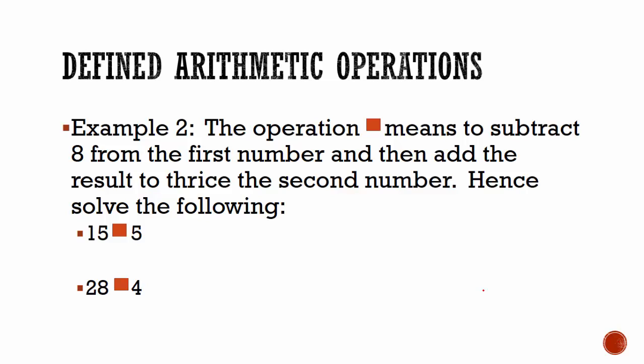So the operation 15 rectangle 5 means you subtract 8 from the first number, so 15 minus 8, and then you add it to thrice, or 3 times, the second number. 15 minus 8 is equal to 7, added to 3 multiplied by 5 is equal to 15. 7 plus 15 is equal to 22.